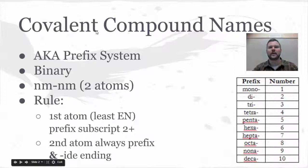These will all be binary for our class, which means there's going to be two atoms, both of which will be non-metals. So both of these atoms are going to live on the right-hand side of the periodic table.